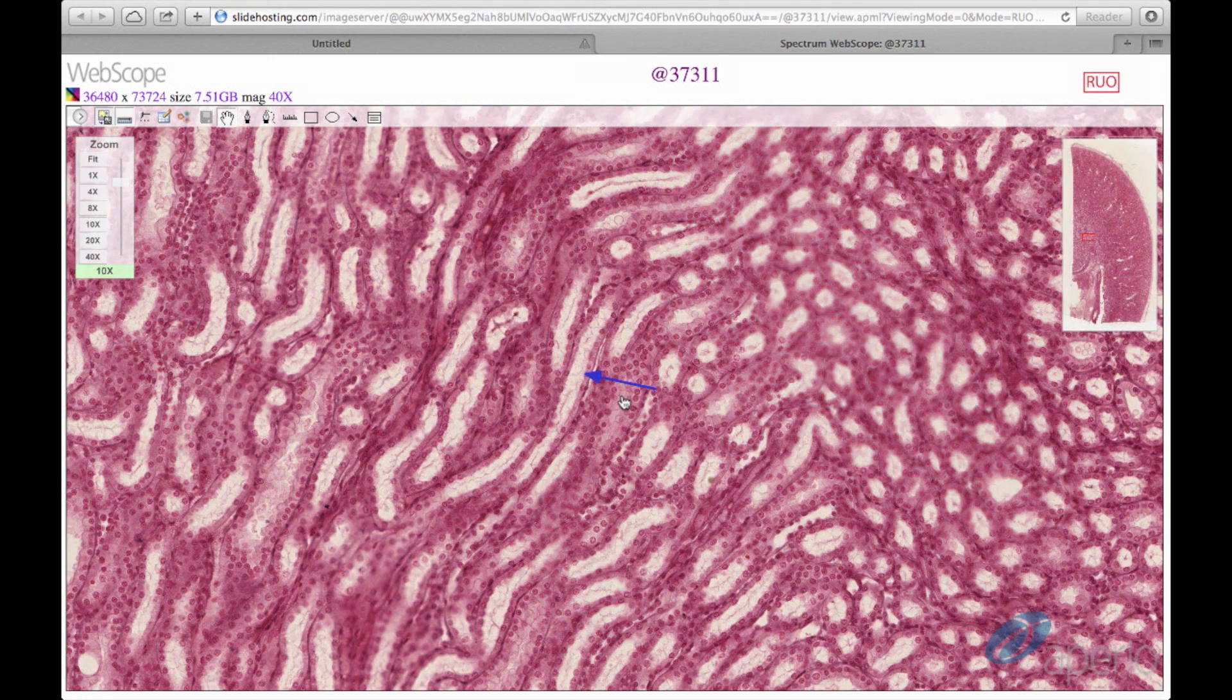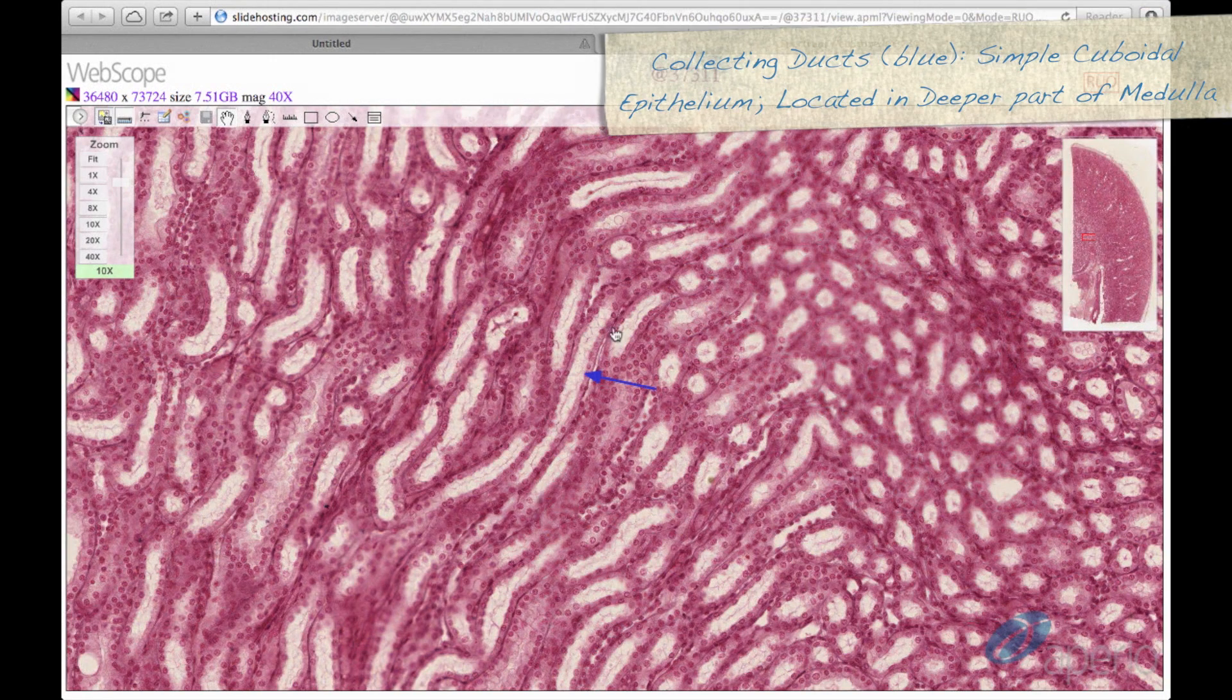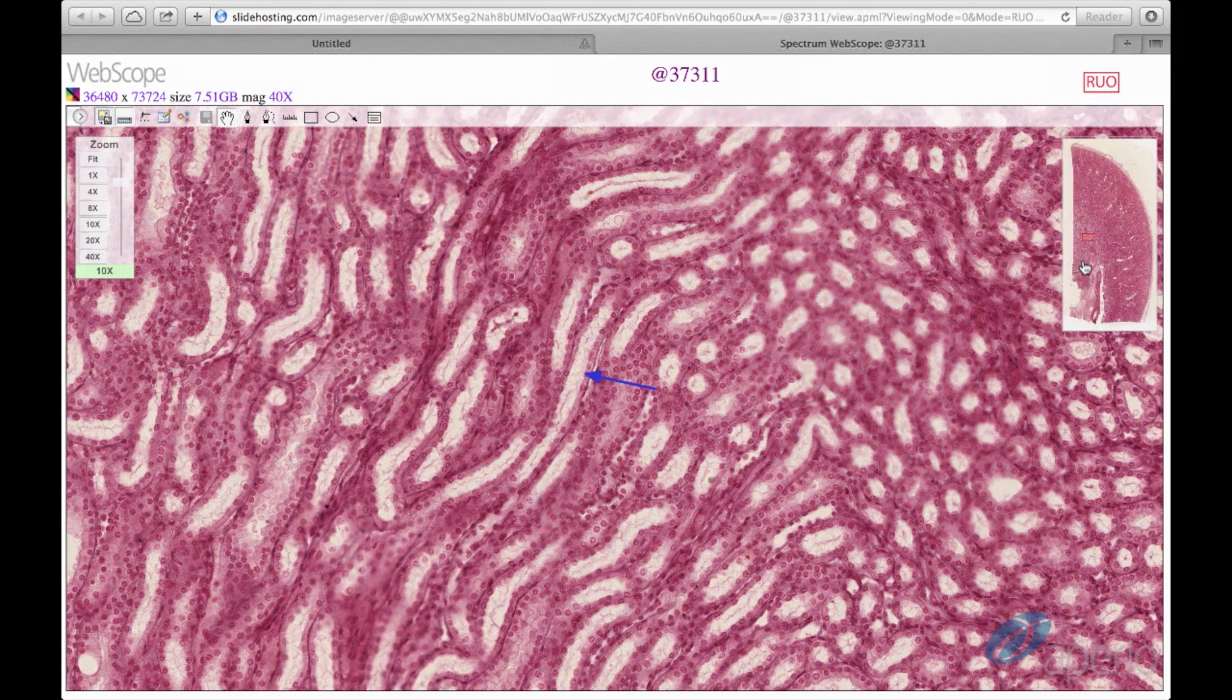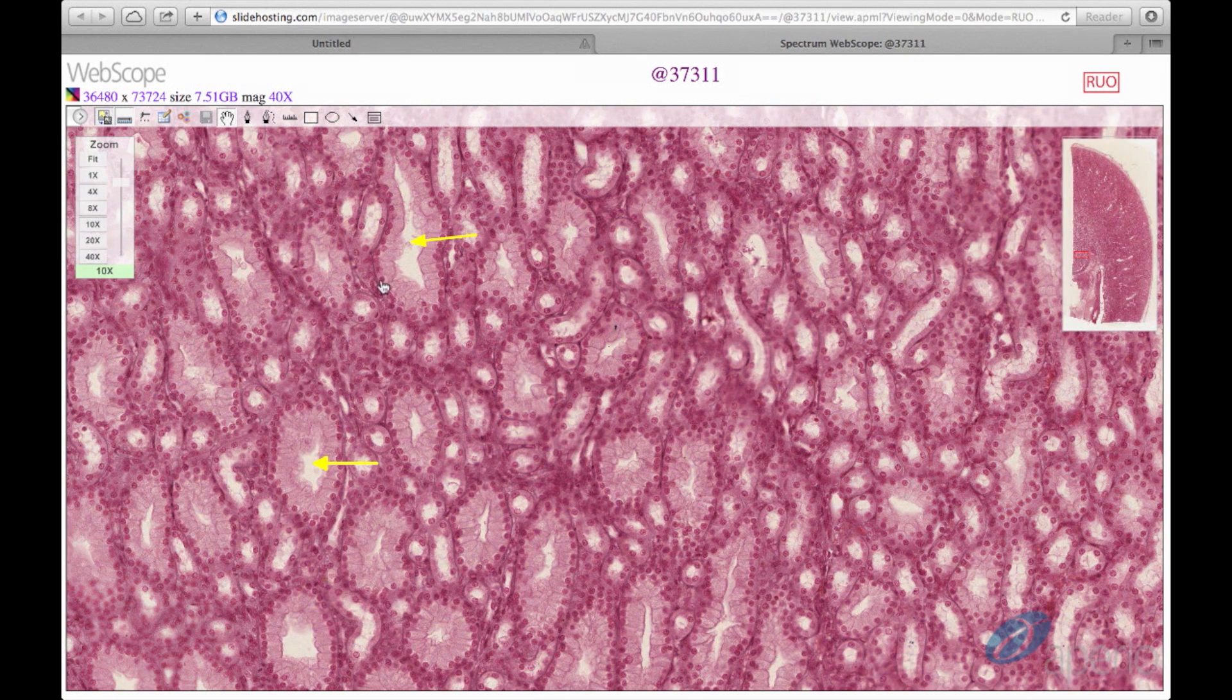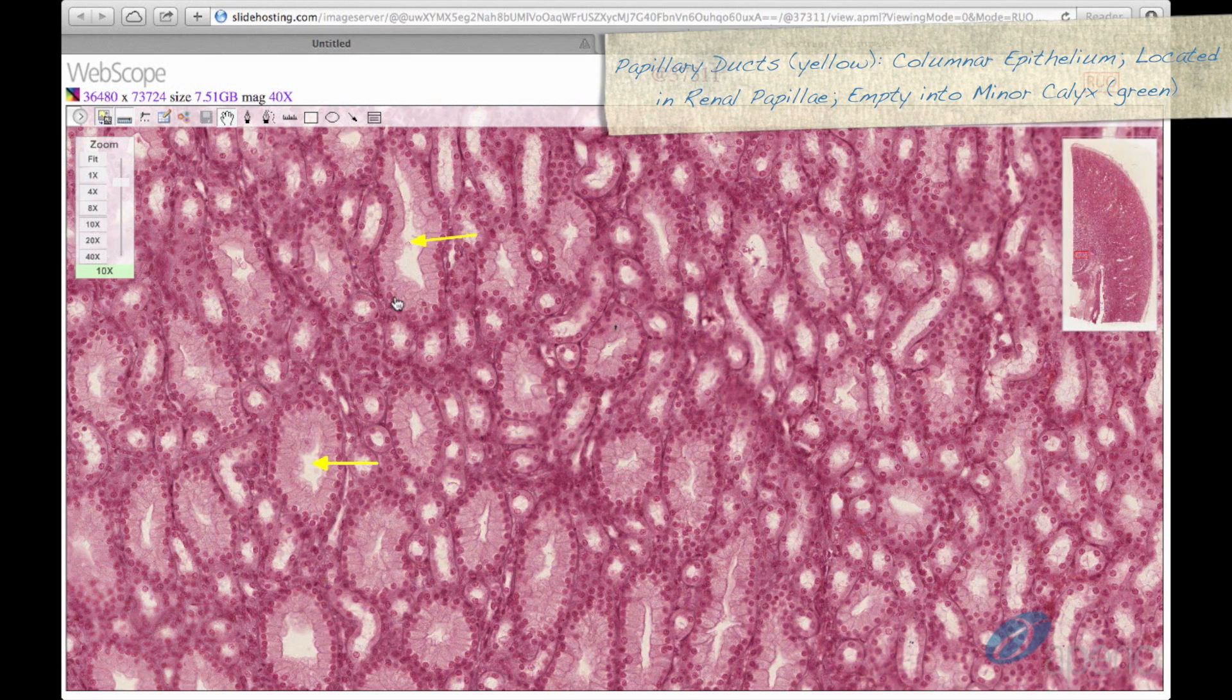Further down in the medulla, we can find the collecting ducts of the nephron here at the blue arrow. These will have a simple cuboidal epithelium as well. As we move further down, we can see a transition into a columnar epithelium, which demarcates a shift into the papillary ducts, seen here at the yellow arrow. Papillary ducts are located within the renal papilla.